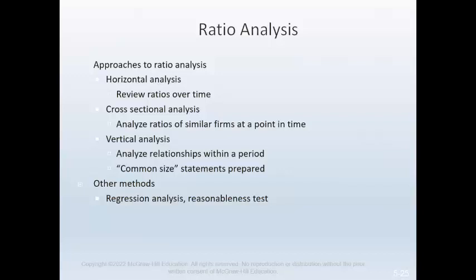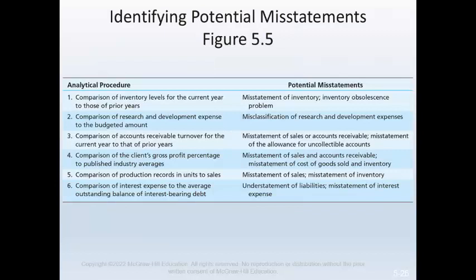For example, the auditor could develop an expectation about the client's sales using a model incorporating the amount spent on advertising, the square footage of selling space, and personal disposable income. Auditors must be careful in comparing ratios between years because journal entries can sometimes have a less-than-obvious effect on ratios. Understanding the effects of entries on ratios can help the auditor investigate the underlying cause of increases or decreases, including journal entries made at year-end that may affect ratios calculated prior to year-end.